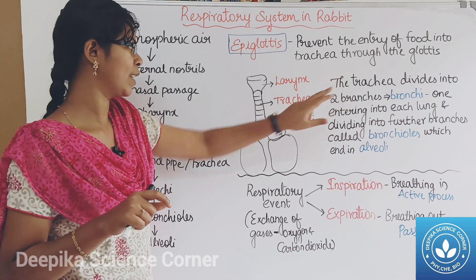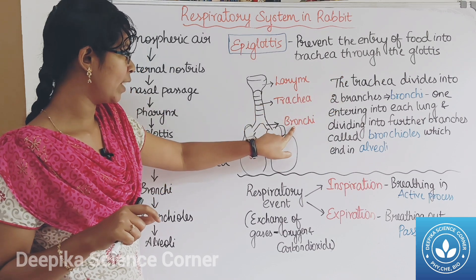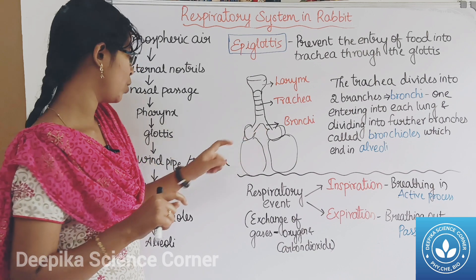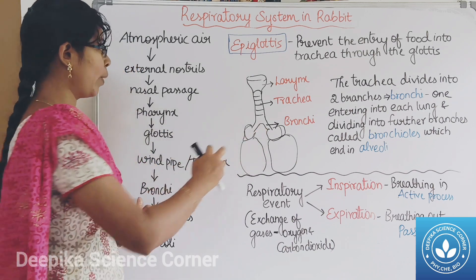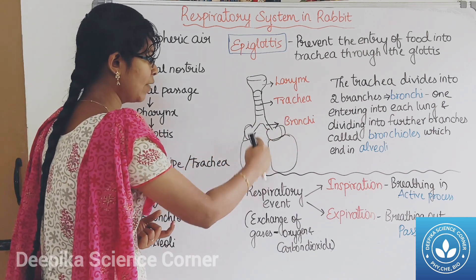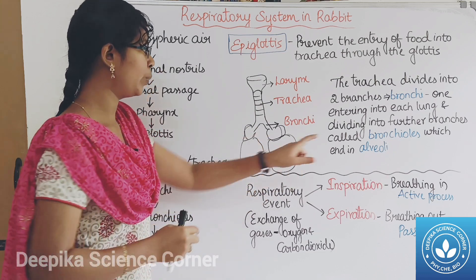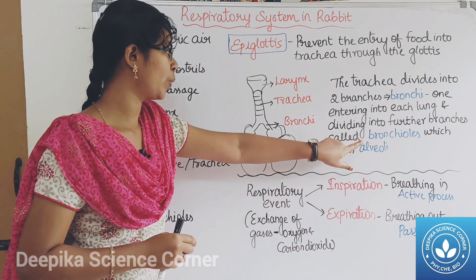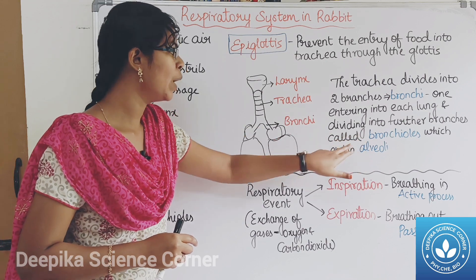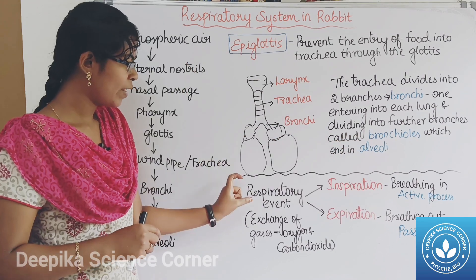The trachea is divided into two branches called bronchi. Each bronchus enters one lung. The bronchi further divide into bronchioles, which end in alveoli.